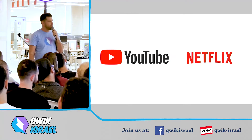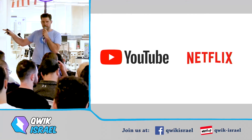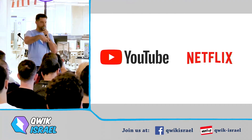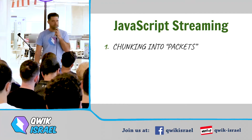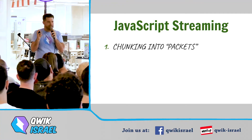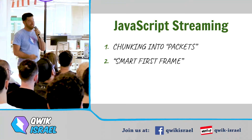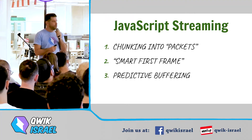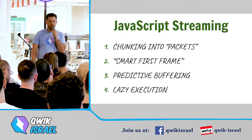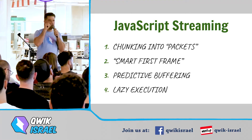What is JavaScript streaming? Remember the metaphor: downloading versus streaming. It's the same concept but more nuanced — we're not dealing with linear videos, we're talking about web apps which are more like 'choose your own adventure.' Depending on which page you go to, you load the next set of steps. Broken down into four parts: chunk your giant app into small packets; produce a smart first frame; do predictive buffering to predict what the user will do next; and enter lazy execution mode — execute only the JavaScript the user needs at that moment and no more.